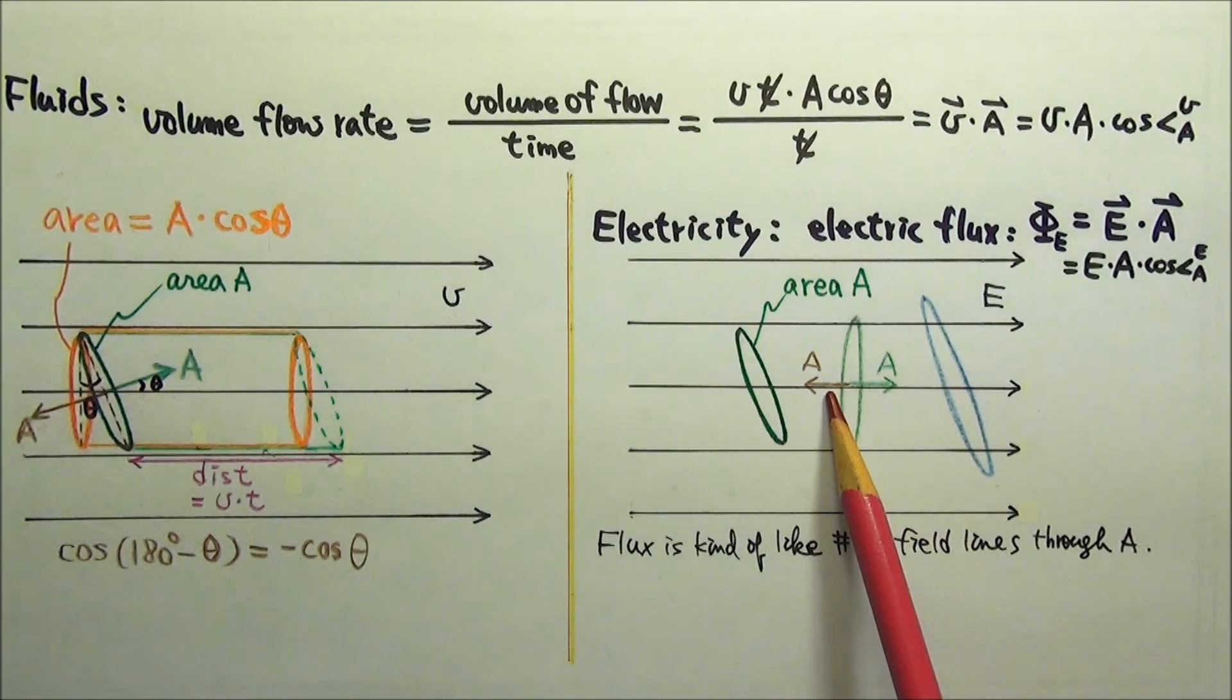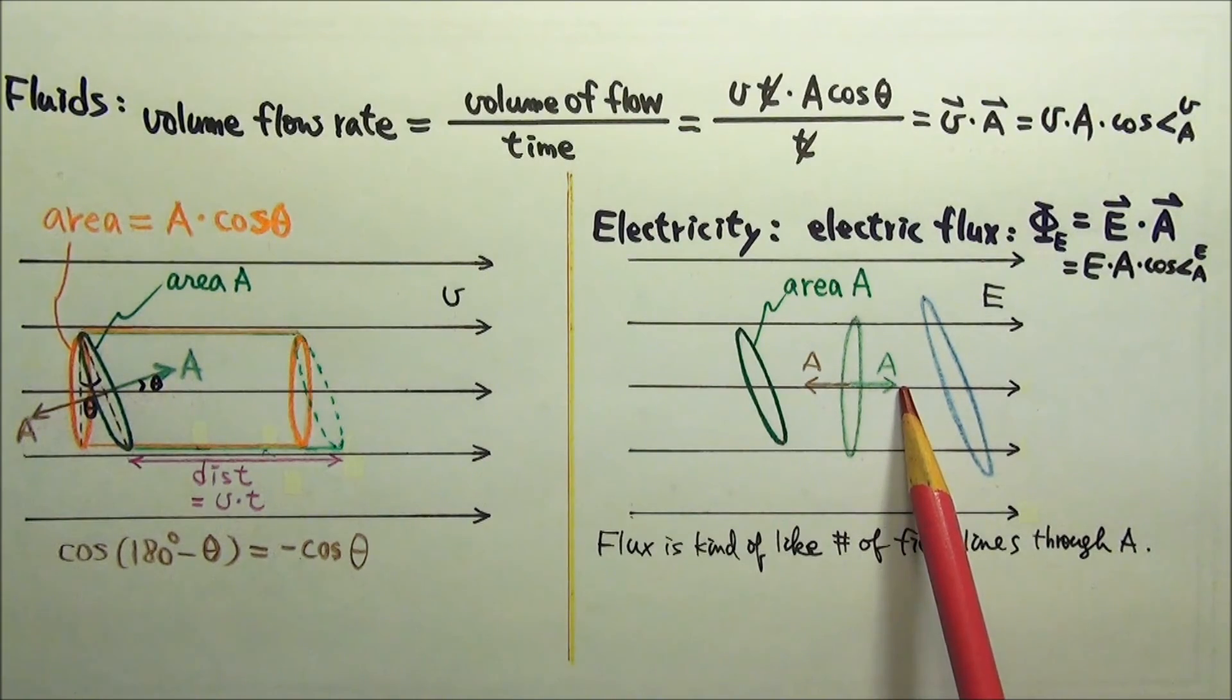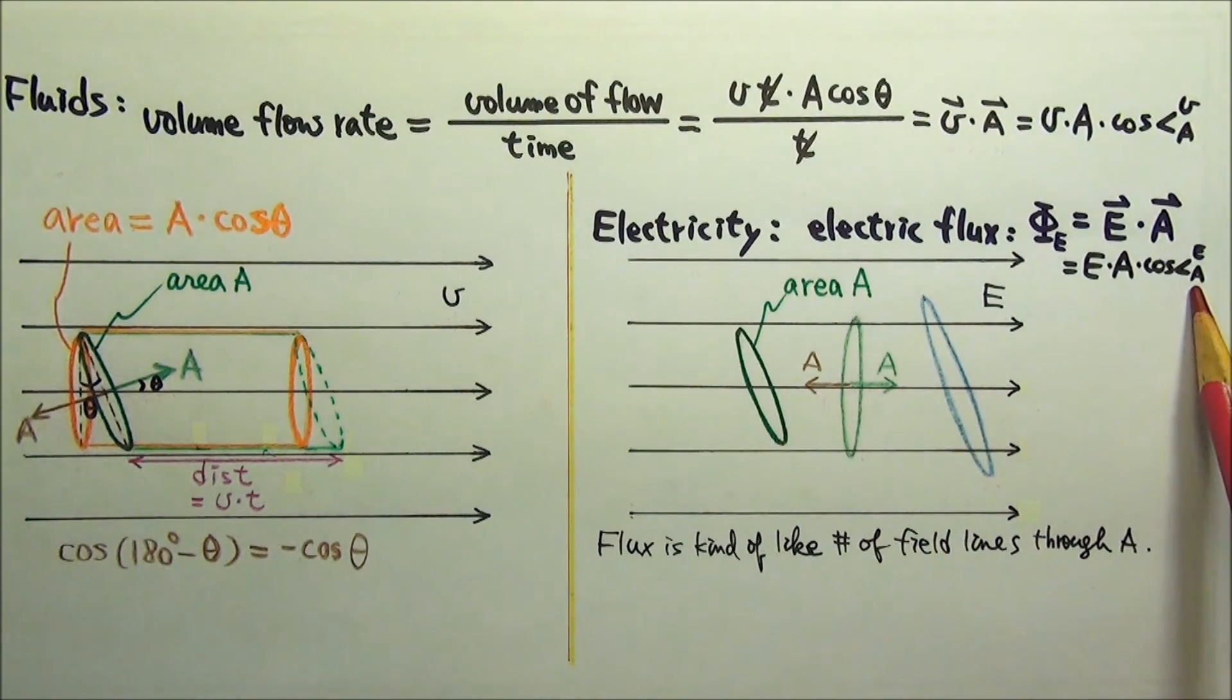Of course, we can also choose to use the normal vector that goes to the left. So E and A are in opposite directions. The angle between the two is 180 degrees, and the cosine 180 is negative 1. We would get the same amount of flux, but with a negative sign.